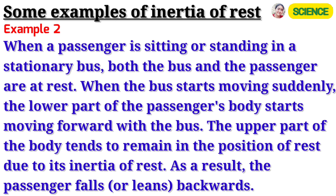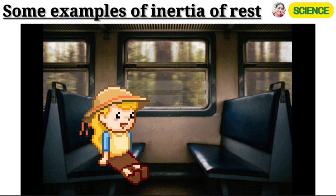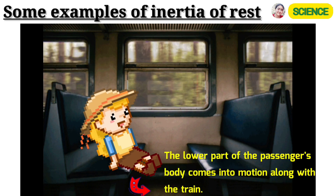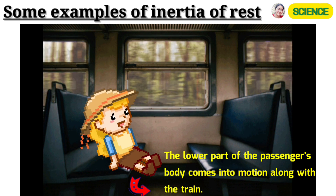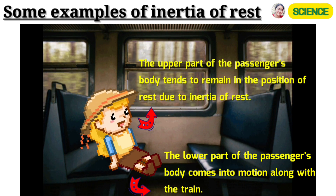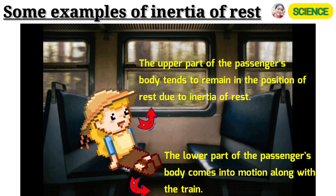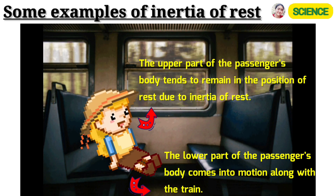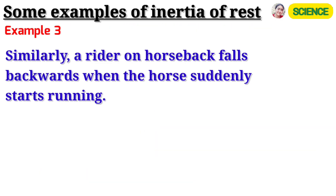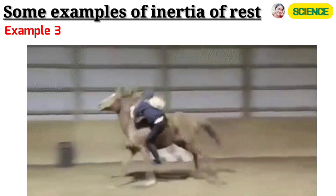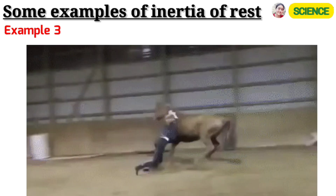Example 2: When a passenger is sitting in a stationary train, both the train and the passenger are at rest. When the train starts moving suddenly, the lower part of the passenger's body starts moving forward with the train, while the upper part tends to remain in the position of rest due to its inertia of rest. As a result, the passenger leans backward. Similarly, a rider on horseback falls backwards when the horse suddenly starts running.